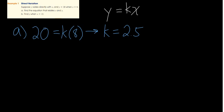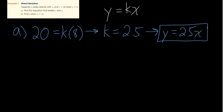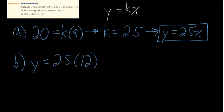Part (b): find y when x equals 12. Using the equation y equals 2.5 times x, we get y equals 2.5 times 12. Two times 12 is 24, and the additional half gives us 30. So y equals 30. That's the direct variation — pretty straightforward.